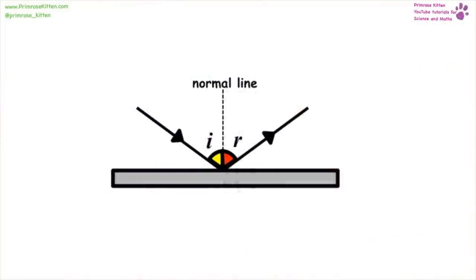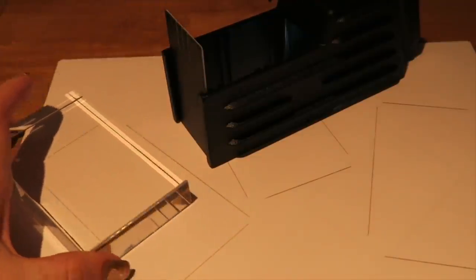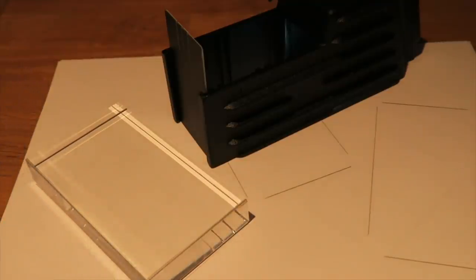When a wave is reflected, it meets the boundary and is reflected — the angle of incidence always equals the angle of reflection, so i equals r. The normal line is in the middle, drawn as a dashed line at 90 degrees to the mirror or surface. If a sound wave is reflected instead of a light wave, we get an echo. In my experiment with the ray box and perspex blocks, I've drawn around three positions and will now draw the ray diagram.